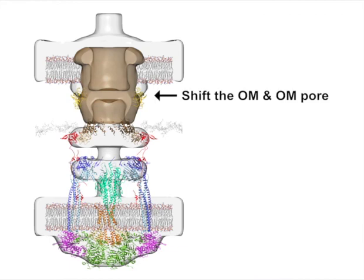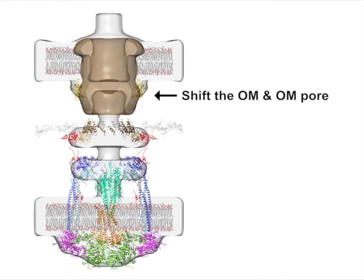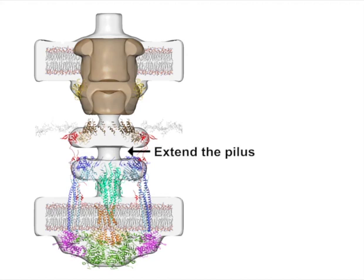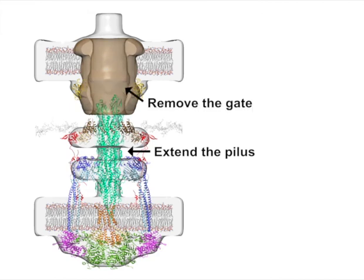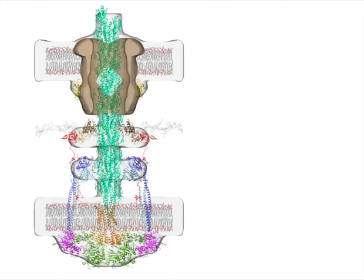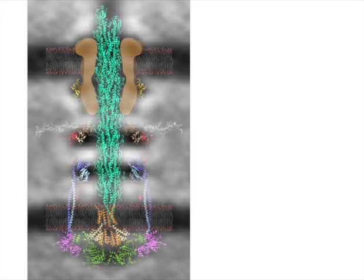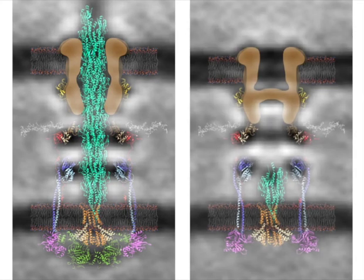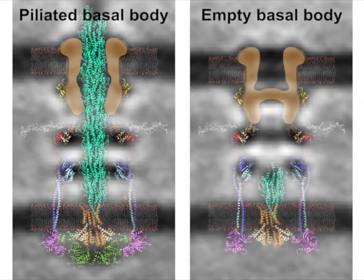We shifted the outer membrane and outer membrane pore structures up to match their densities in the piliated envelope, and finally extended the PLA helical fiber until it protruded through the outer membrane. As the pilus must displace the gate density as it passes through the secretin domain, we removed the gate from the model. This provided us with an architectural model of the piliated type 4 pilus machine, shown here overlaid on the EM density and in a side-by-side comparison with the empty state.